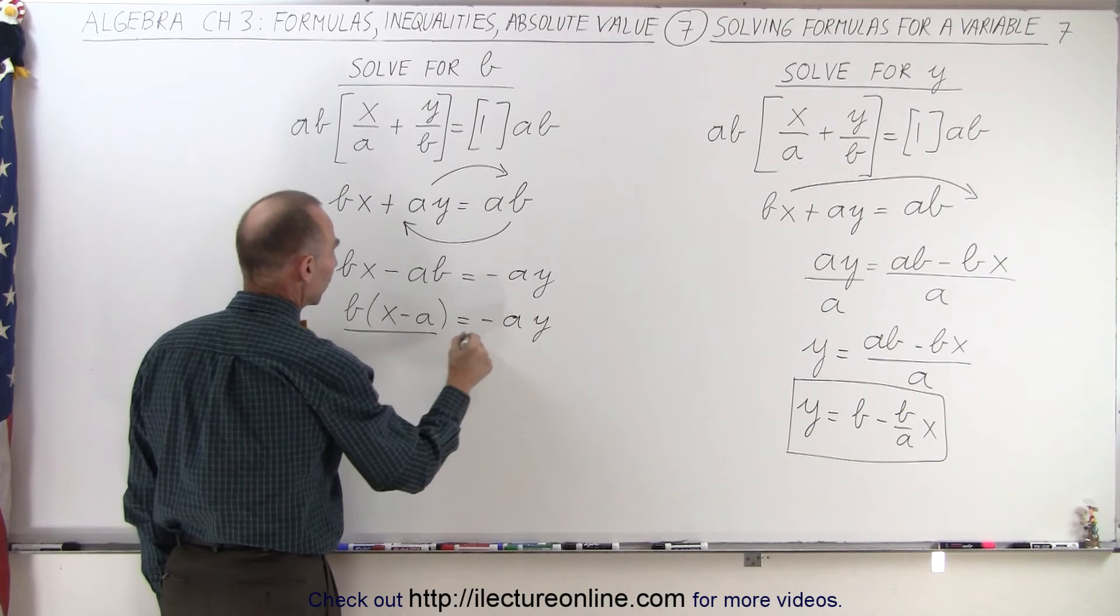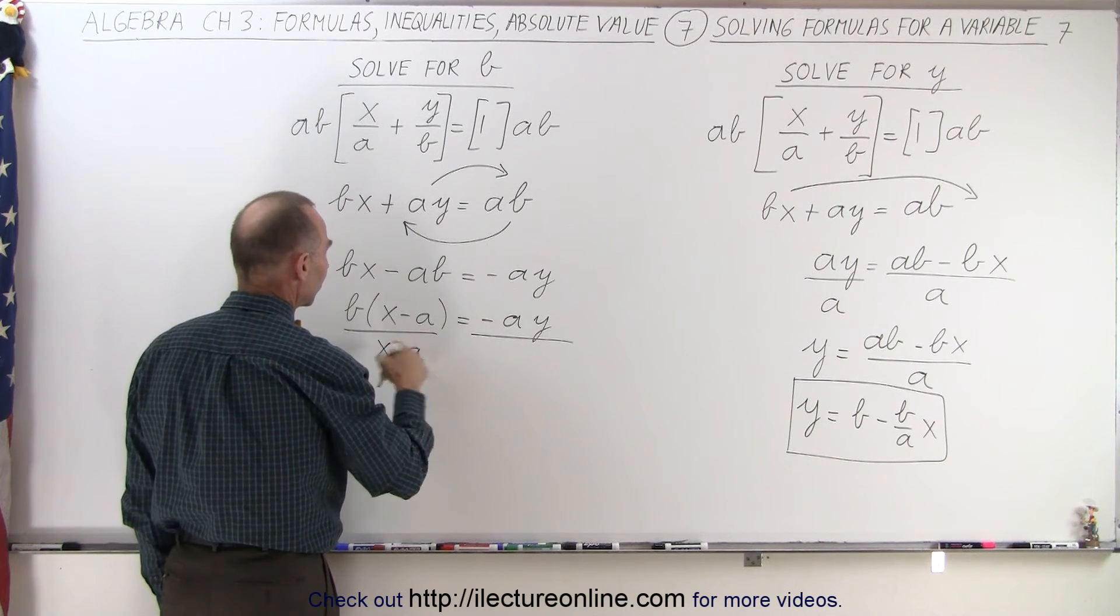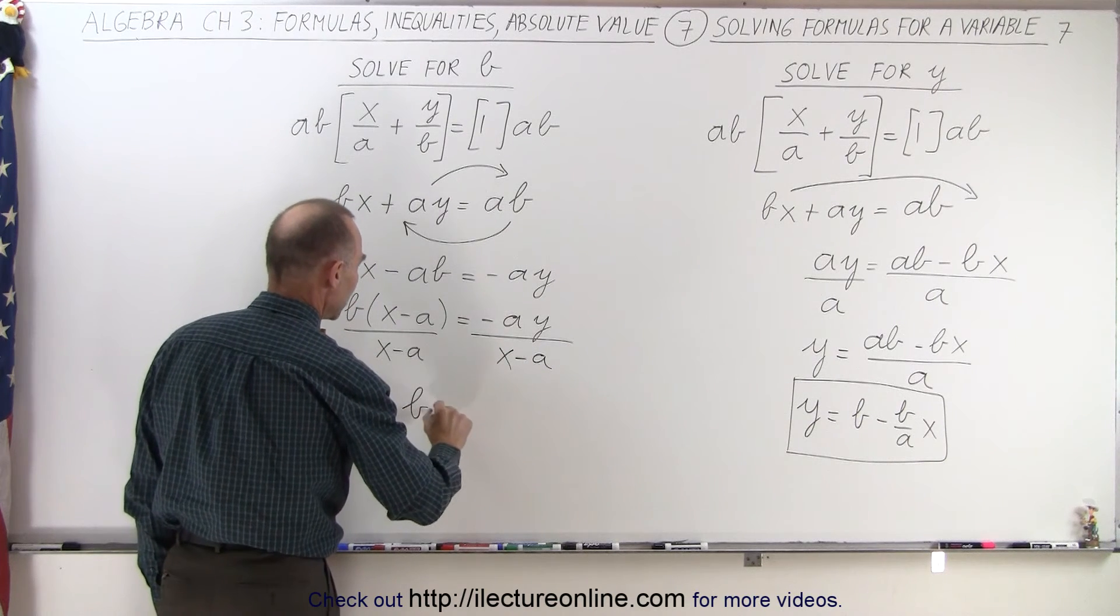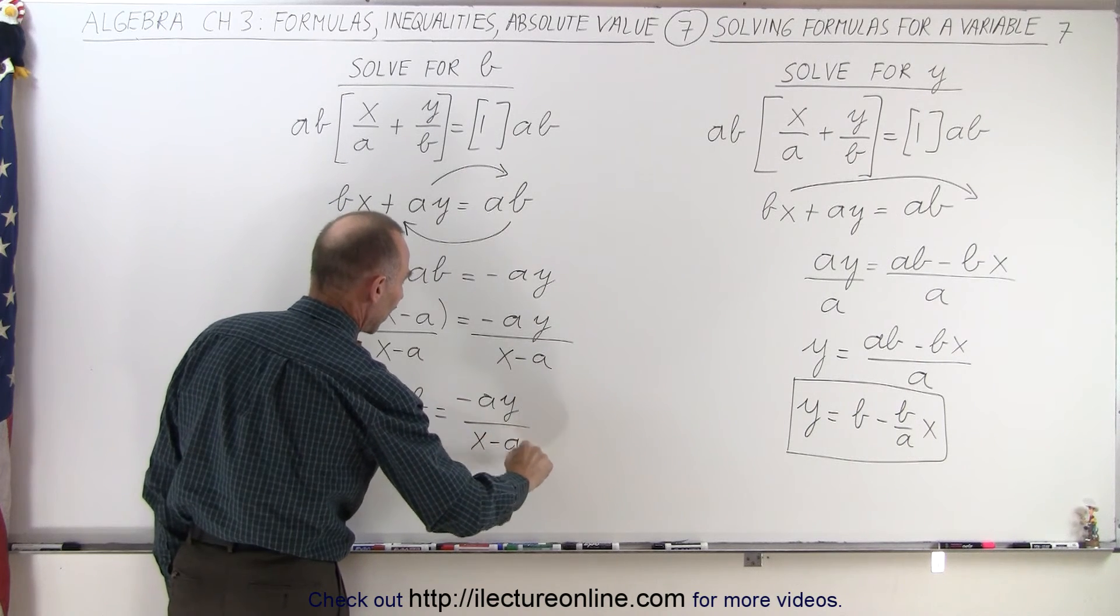And finally, I'm going to divide both sides of the equation by the factor of b, which is x minus a, so this becomes b is equal to minus ay, divided by x minus a.